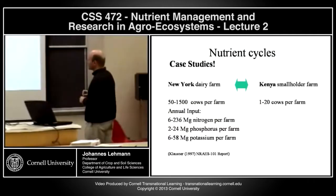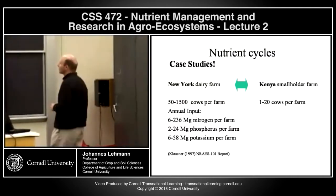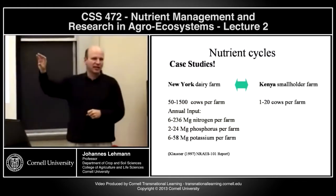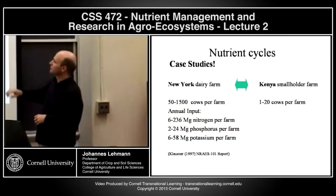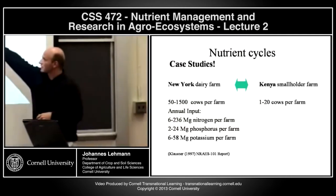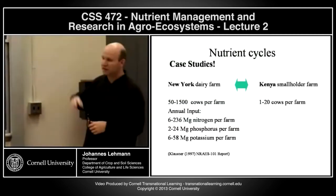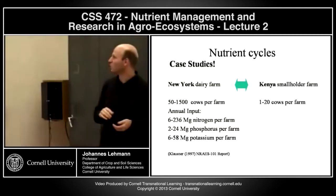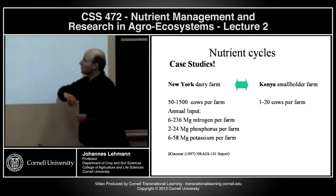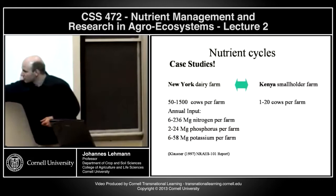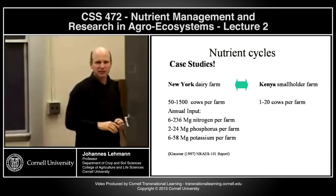To wrap up nutrient cycles, I want to look at a couple of case studies where we need this knowledge about nutrient cycles — where we need to know where nutrients are flowing in an agroecosystem. Here are two very contrasting agroecosystems: a New York dairy farm and a Kenya smallholder farm. The New York farm has 50 to 1,500 cows per farm, and in Kenya, smallholder farms probably rarely exceed 20 cows.